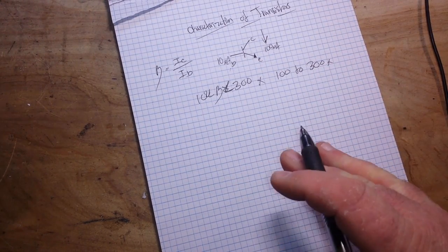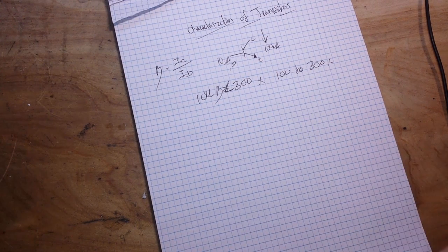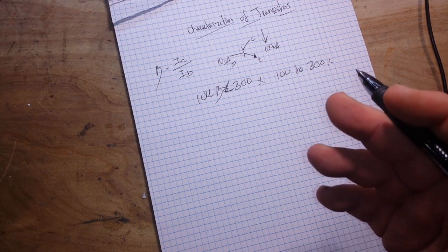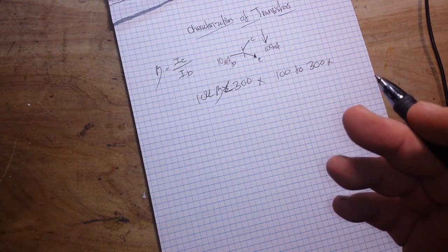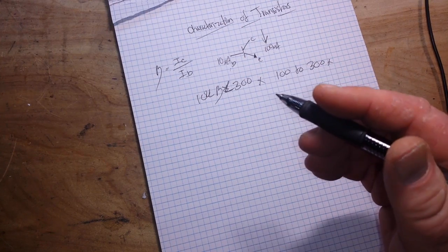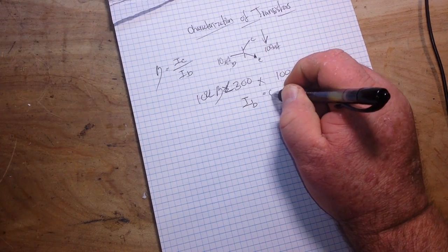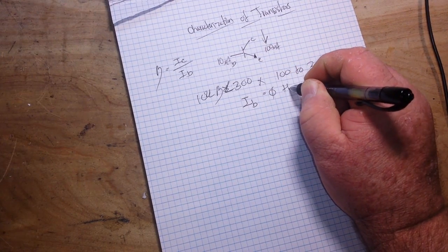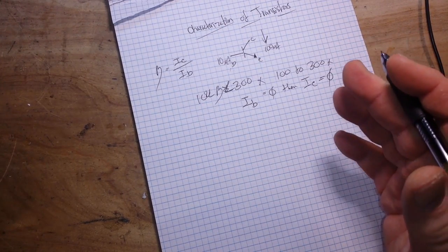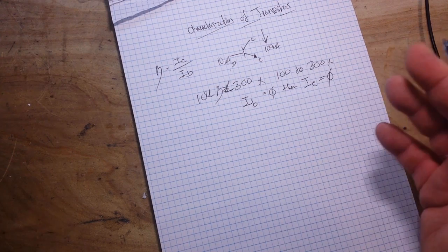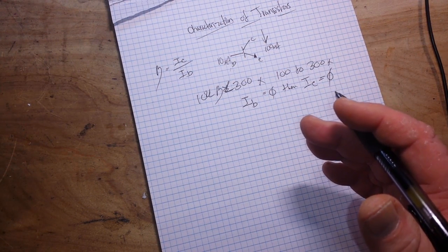So 100 to 300 times, that's your standard for like a 2N2222 transistor. Now the base current, we like to say, controls the collector current, since the size of the base current determines the size of the collector current, and it follows that equation. So if IB, if our base current is equal to zero, well then our collector current must also be equal to zero. That makes sense, right?